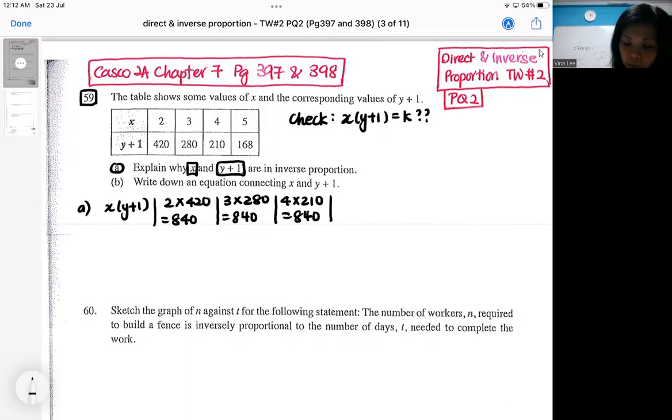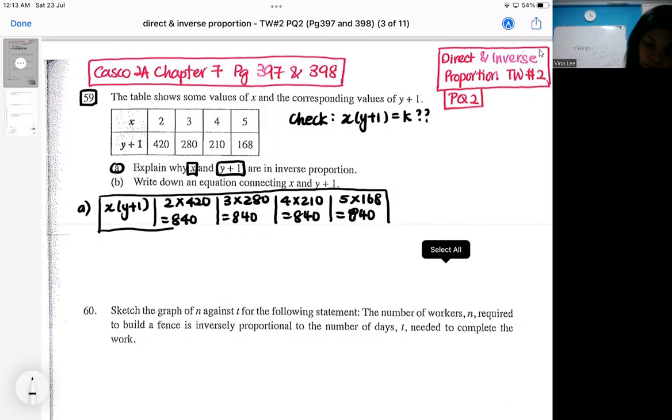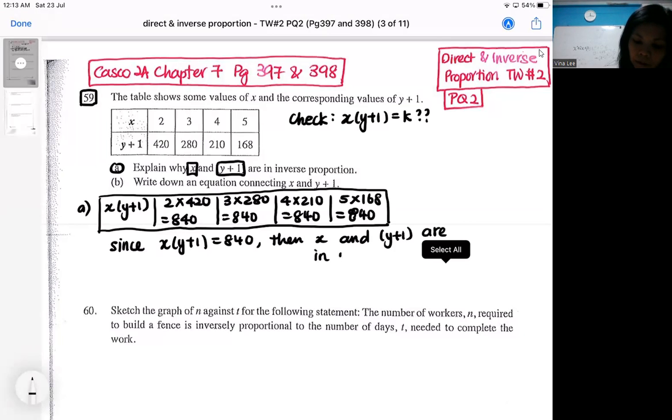So here we got four situations. All the four situations give you the same number. So you will explain, since x multiplied by y plus 1 is always 840, then x and y plus 1 are in inverse proportion.